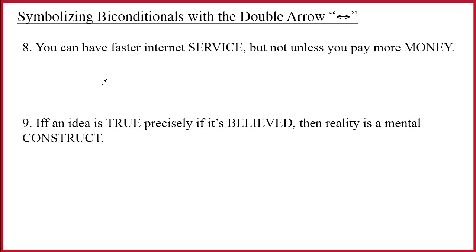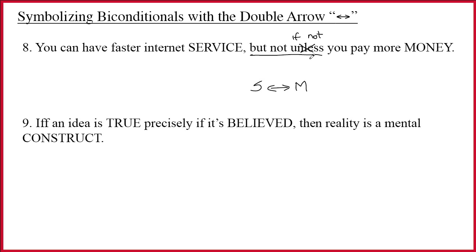Sentence eight is also about a synonym. 'But not unless' turns out to be a synonym for 'if and only if,' so the symbolization is simply s double arrow m. You might ask why 'but not unless' means the same thing as 'if and only if.' Remember our trick for 'unless': cross it off and write 'if not.' So the sentence says 'you can have the service, but not if not you pay more money.' This doesn't reduce to 'if and only if' in any obvious formal way — it's more of a colloquial logical expression.